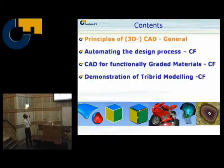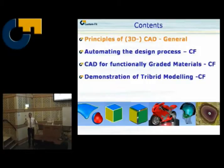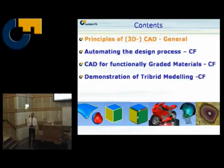Then something on the automation of the design process I mentioned in the introduction. There's a lot of know-how involved, and a lot of know-how coming from other sources than geometrical data, and we all need to combine it. As human beings, we can make mistakes, and when we try to automate it and put a lot of know-how in the system, we try to avoid that.